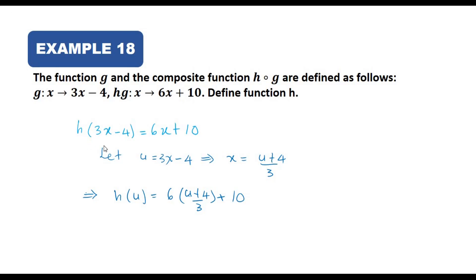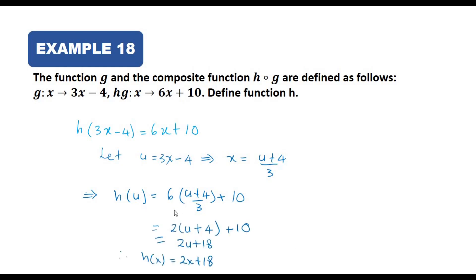Let u = 3x − 4, so x = (u + 4)/3. Substitute into h: h(u) = 6·(u + 4)/3 + 10. Simplifying, h(u) = 2(u + 4) + 10 = 2u + 8 + 10 = 2u + 18. Changing back u to x, we get h(x) = 2x + 18.